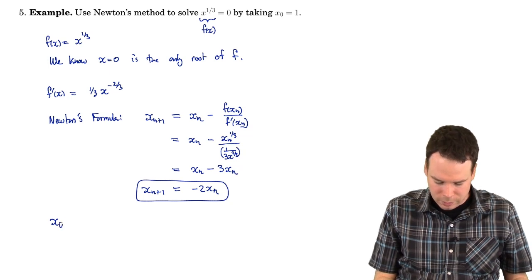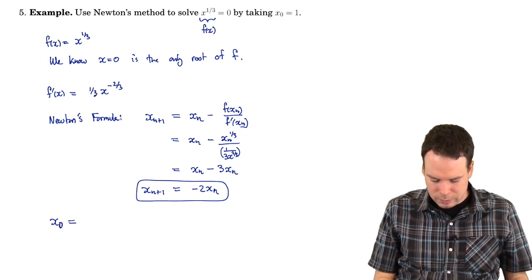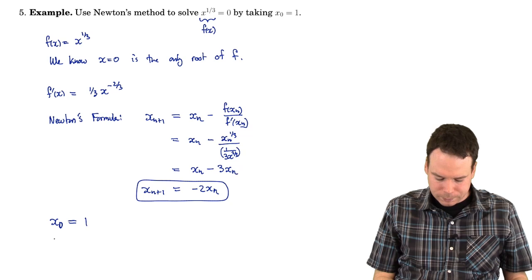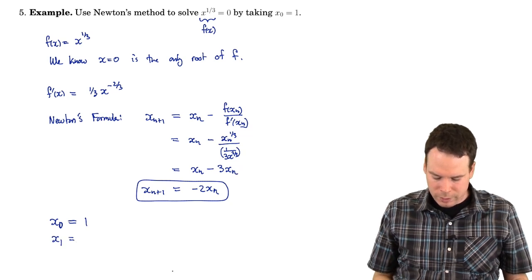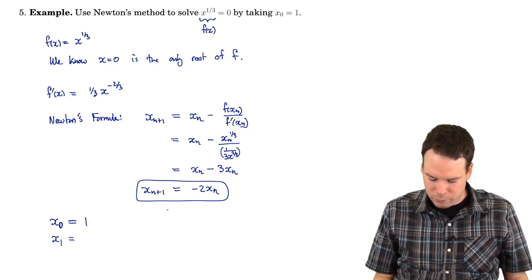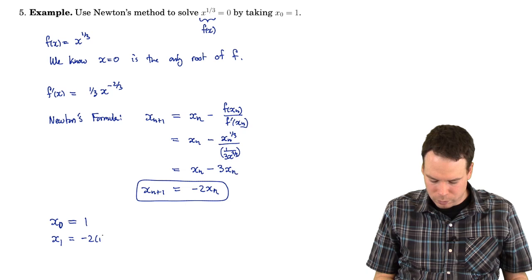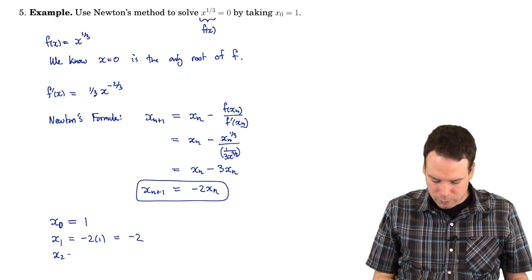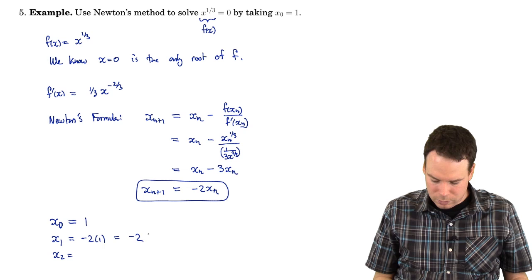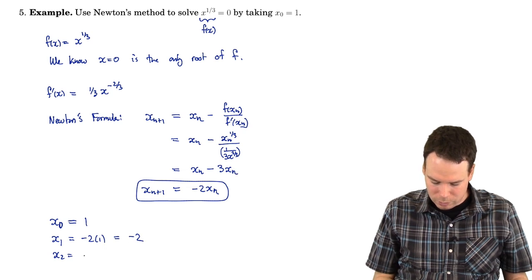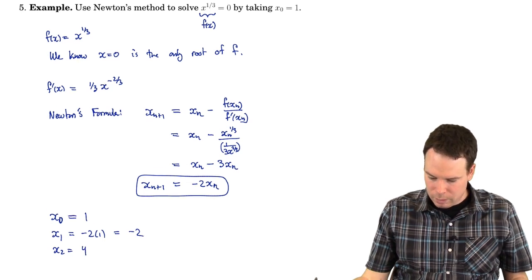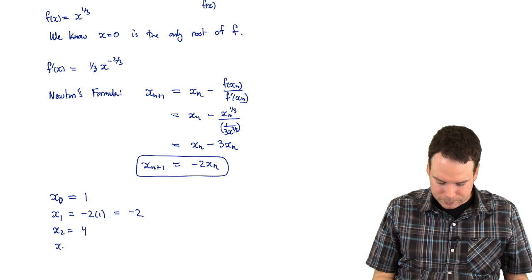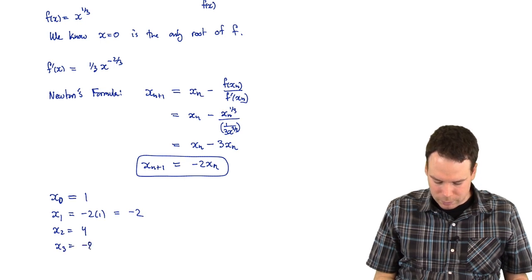So there's a nice compact expression for Newton's iterative formula. Let's start with our initial guess. Here we're calling it x0. x0 is one. What do we get as our next value? Well, plugging that into our iterative formula, we get it's negative two times one or negative two. Plugging that into our iterative formula, we get that it's negative two times the previous one, so negative two times negative two is four. Okay, plugging that in again becomes negative eight.